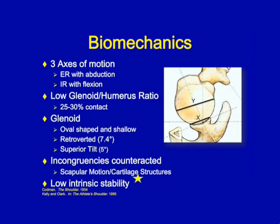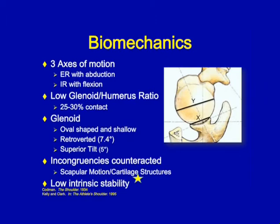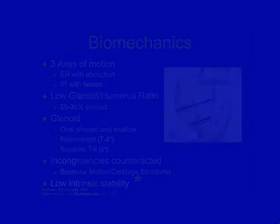Conversely, there are several degrees of retroversion and superior tilt of the glenoid, which prevent anterior and inferior translation of the humeral head. These minor incongruencies are counteracted and aided through scapular motion and supporting cartilage structures. All of these lead to an inherent low intrinsic stability, making the glenohumeral joint one of the easier joints to dislocate.